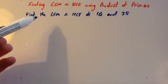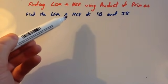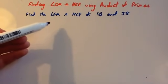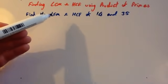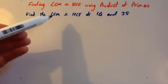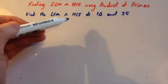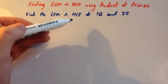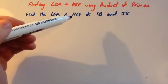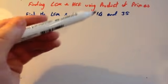Before you do that, it might be useful to watch the video on lowest common multiple and the video on highest common factors to remind yourself of what they are. Remember, the lowest common multiple is the first number in both of the numbers' times tables, or the first multiple of both numbers that is the same. And the highest common factor is the largest number that divides into both of the numbers — that is a factor of both the numbers.